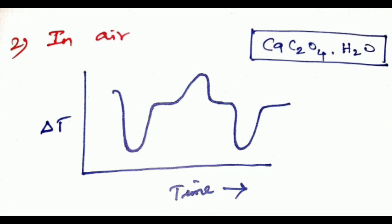The second step is exothermic, while first step and third step are endothermic. Therefore, we get two endothermic and one exothermic peak in air atmosphere. In nitrogen atmosphere, we get three exothermic peaks.